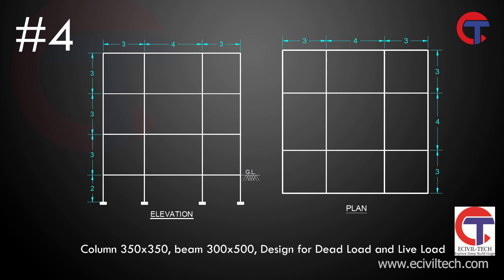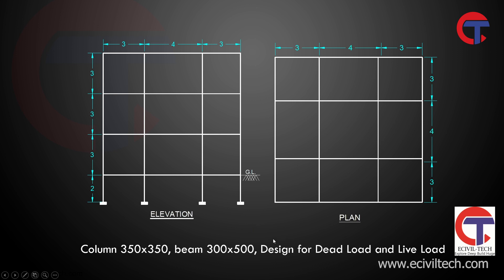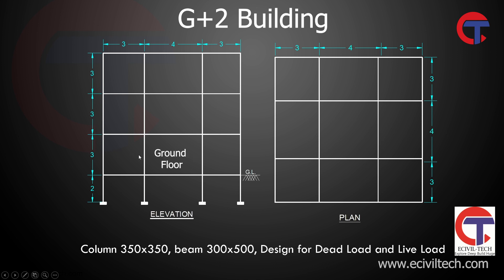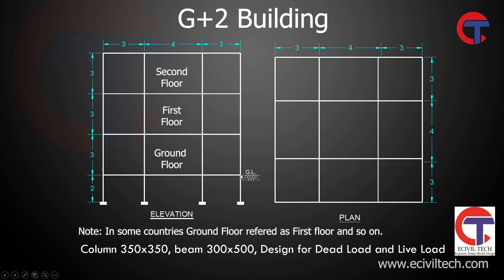Hello engineers, welcome to eCiviltech. In this video we are going to learn how to create a model in STAAD Pro. We are going to create a G+2 building model. This is the ground floor, first floor, and second floor. Below ground level is the foundation, with a foundation depth of 2 meters. This is the elevation part and this is the plan part.